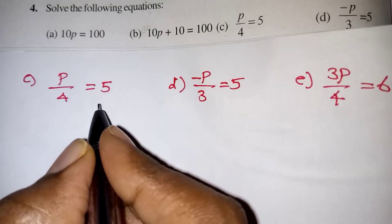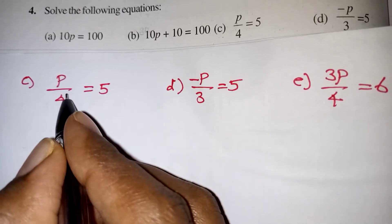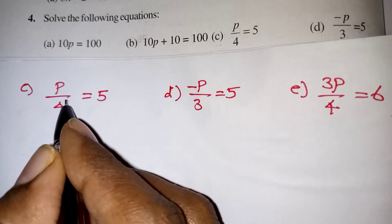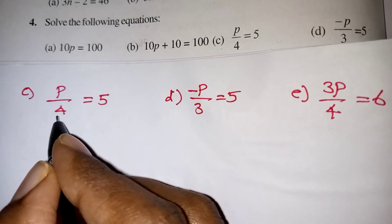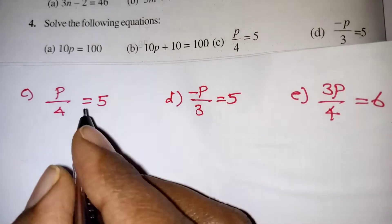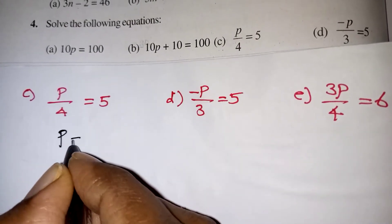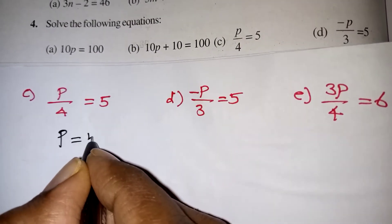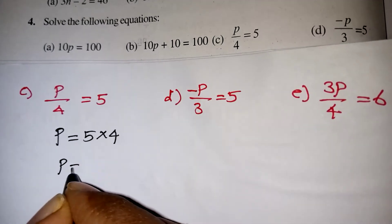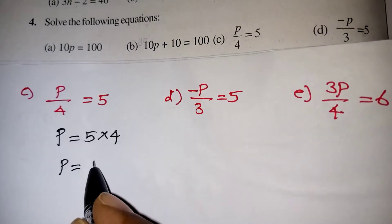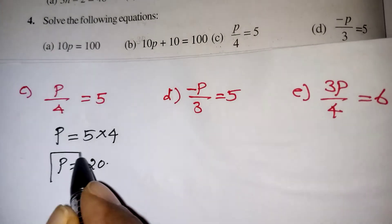Here p by 4 is equal to 5 is our question. Here 4 is in the denominator, that means division. If you take division 4 to the other side, it will definitely become multiplication. So 5 multiplied by 4 — p is equal to 5 fours are 20 — that is your correct answer.